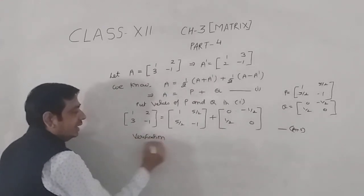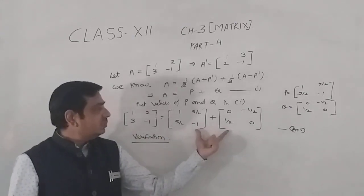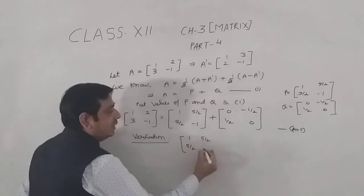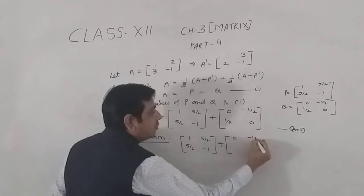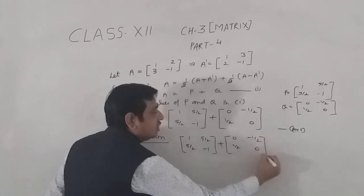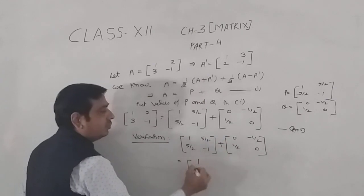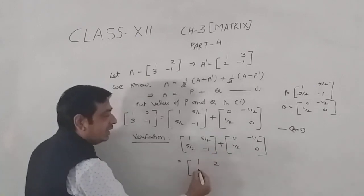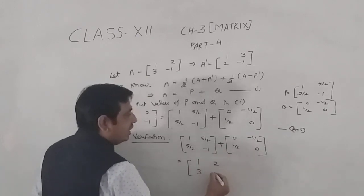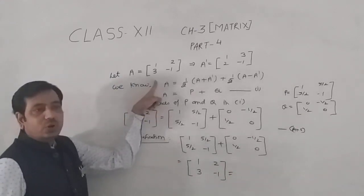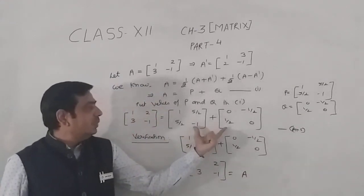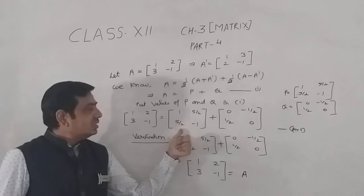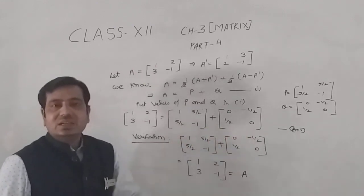One more thing — let's verify. Adding [1, 5/2; 5/2, -1] plus [0, -1/2; 1/2, 0]: 1+0=1, 5/2-1/2=4/2=2, 5/2+1/2=6/2=3, and -1+0=-1. This equals A, confirming that if you add these two matrices you get back A. So we have successfully expressed the given matrix as a sum of a symmetric and a skew symmetric matrix. Namaste.